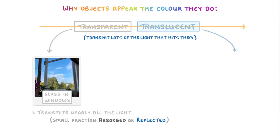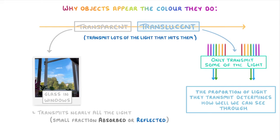Meanwhile, translucent objects only transmit some of the light, and the proportion of light they transmit determines how well we can see through them.